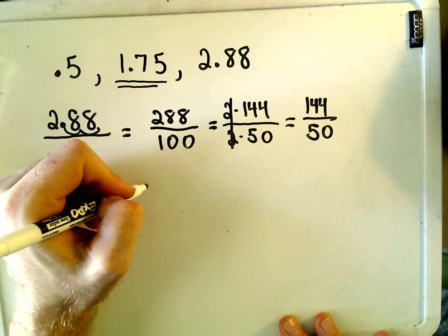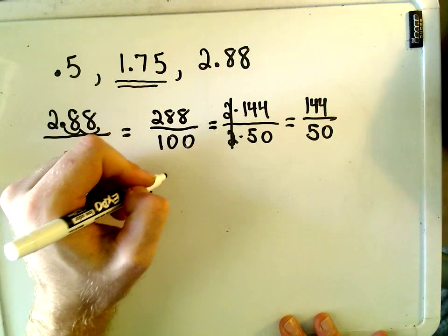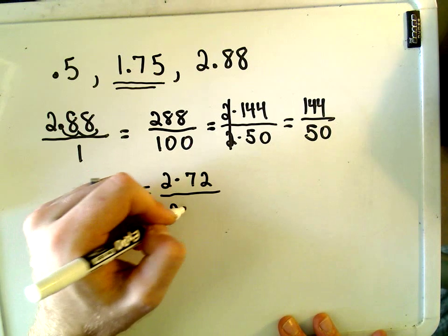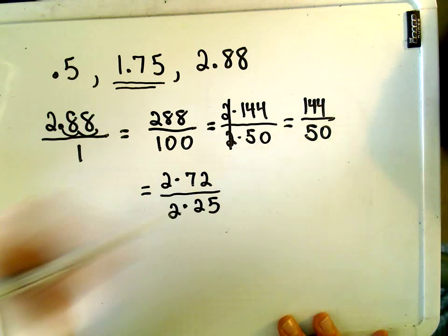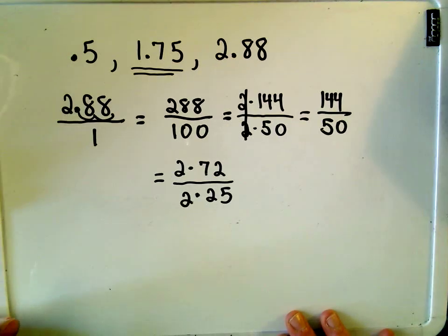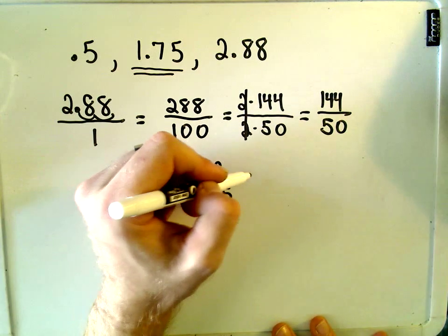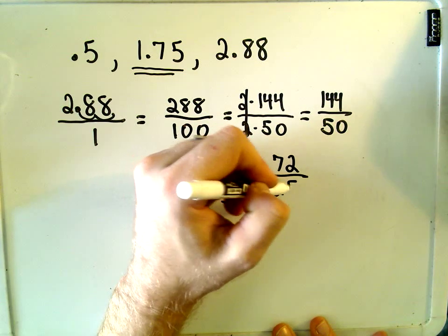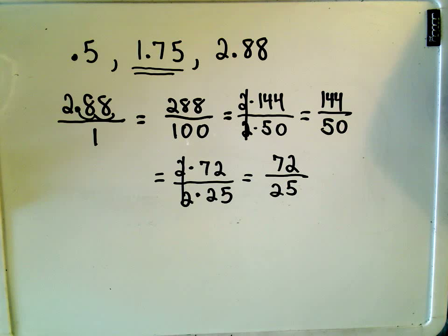Since they're both even, notice you can write 144 as 2 times 72, and then 50 as 2 times 25. Same trick, we can cancel out our twos. We're left with 72 over 25, and now I think, does this reduce any further?